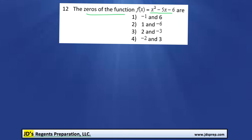Zeros are just another word for the x-intercepts. And to find the x-intercepts of a quadratic function like this, the trick is to simply factor it. So I'm going to write out x squared minus 5x minus 6.